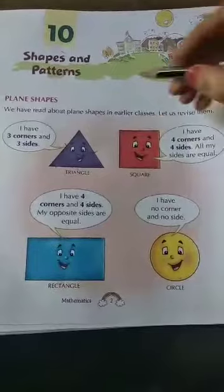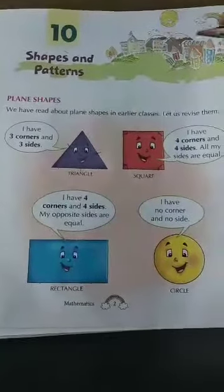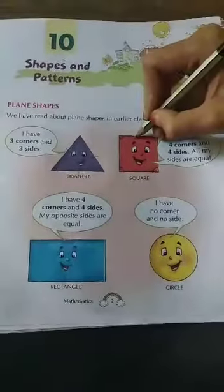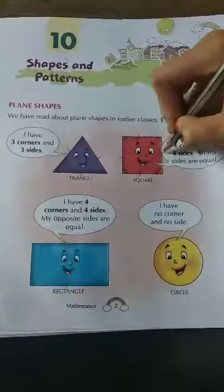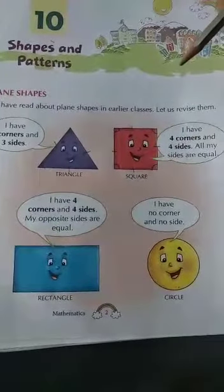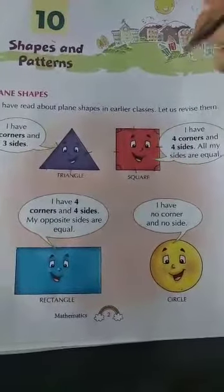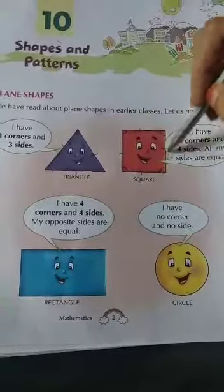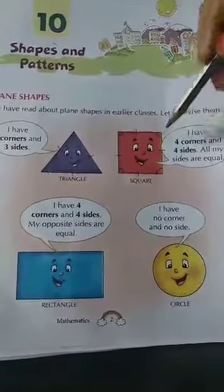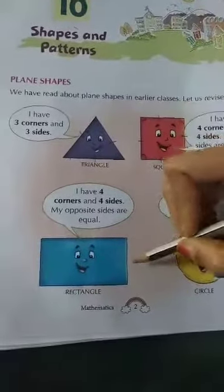Now see the next one — this is a square. A square has four corners: one, two, three, four, and four sides: one, two, three, four. In a square, all sides are equal, which means all these sides are equal.